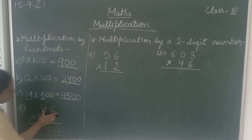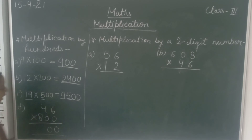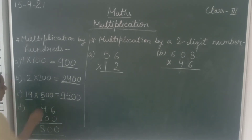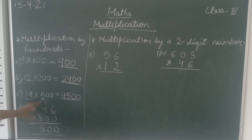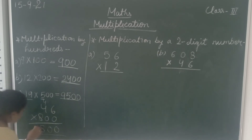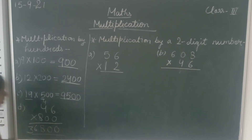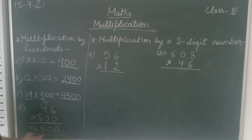Now we will multiply 46 by 8. So 8 sixes are 48: write 8 and carry 4. Now 8 fours are 32, plus 4 is 36. So we write 36. The product is 36,800.